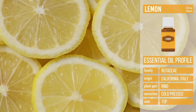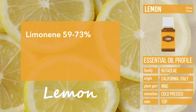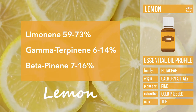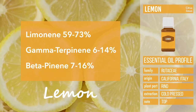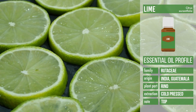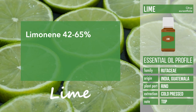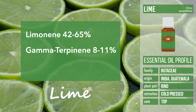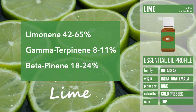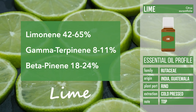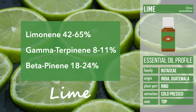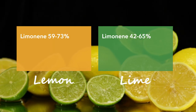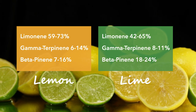Lemon consists of 59 to 73 percent limonene, 6 to 14 percent gamma-terpinene, and 7 to 16 percent beta-pinene, while lime essential oil contains 42 to 65 percent limonene, 8 to 11 percent gamma-terpinene, and 18 to 24 percent beta-pinene.